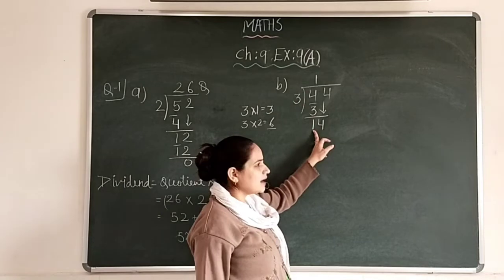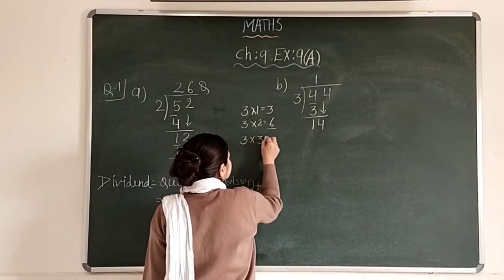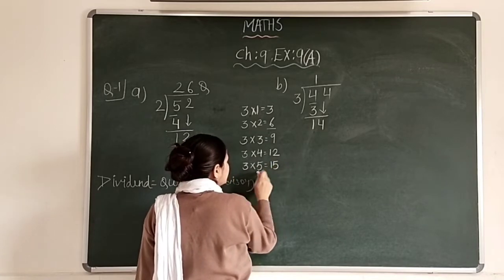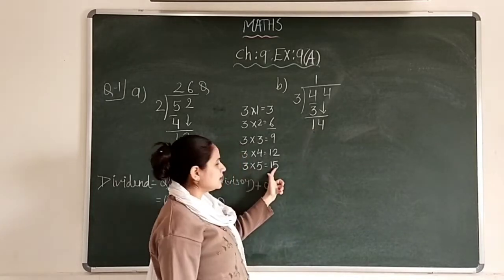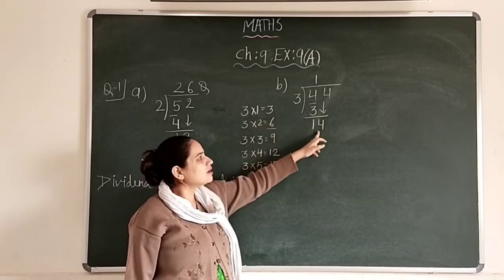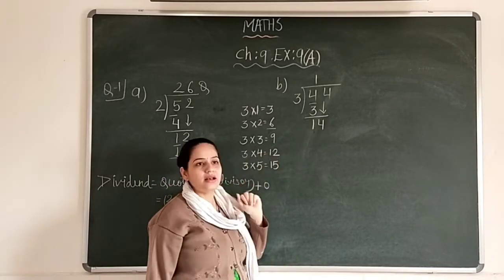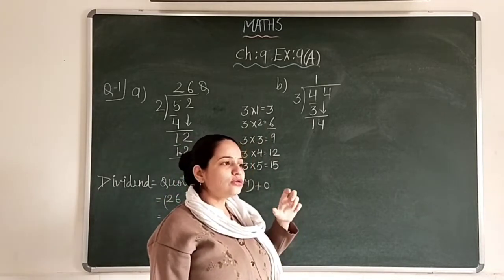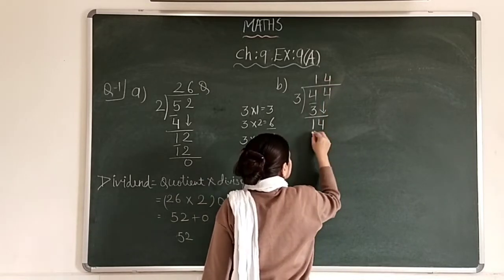Now think: does 14 appear in the 3's table? If not, which smaller number close to 14 appears? Checking: 3 4s are 12, 3 5s are 15. Since 15 is greater than 14, we cannot use it. The number just below in the table is 3 4s are 12. So we select 12 because it is the closest smaller number to 14. We write 3 4s are 12.